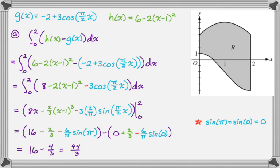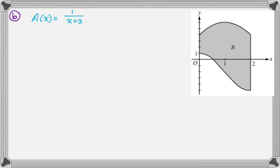part B is, we're told the region R is the base of a solid. So for the solid at each X, the cross section perpendicular to the X axis has area a of X, which is one over X plus three. So they're telling us the area of the cross section.